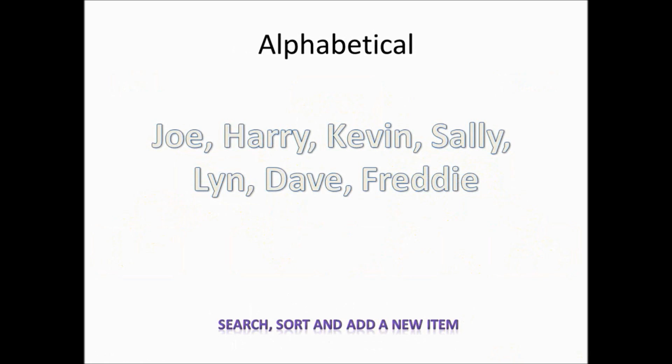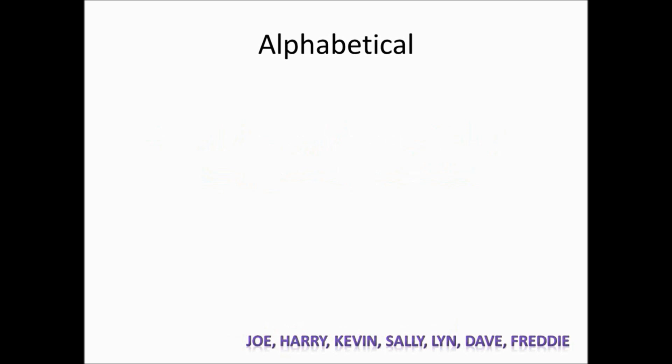Alphabetical. Joe, Harry, Kevin, Sally, Lynn, Dave, Freddie. Get these into alphabetical order. Searching and sorting and adding new items in a dictionary, for example, would require that we store data in A to Z order. Okay. So remember, a computer doesn't know what the alphabet is, what letters are. But it can learn to sort and store structure according to the binary tree. So let's have a look. We're going to do something called in-order traversal. Now, in-order traversal is exactly what I've just mentioned. Left node right. Left node right.